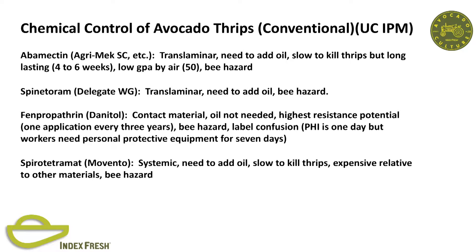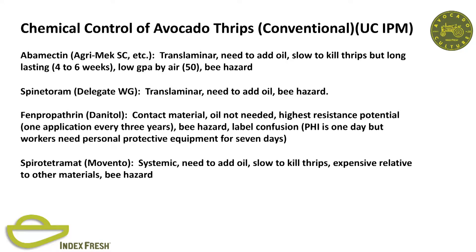We ended up getting more controls for avocado thrips. Still, abamectin is the preferred one because it's cheap—we've gotten a lot of generic knockoffs, it lasts a long time, it's easy to apply, it's translaminar. You can fly it on top of the leaf; thrips feed from the bottom and die from feeding through the leaf. Delegate has the same mode of action, translaminar, you need oil, it's a B hazard. Danitol is a contact material, highest resistance potential, B hazard—label confusion: the harvest interval is one day, but pickers have to wear safety equipment for seven days if they're picking. Movento is a newer product, systemic, you need to add oil, it's slow to kill thrips, expensive, and a B hazard.